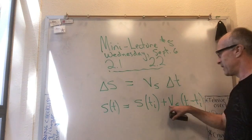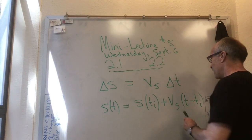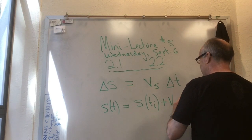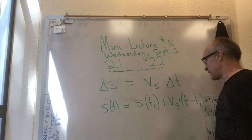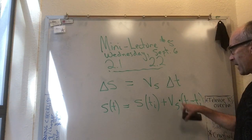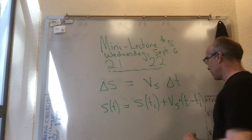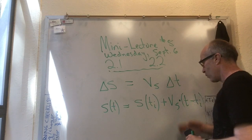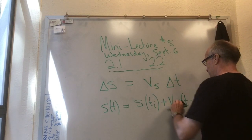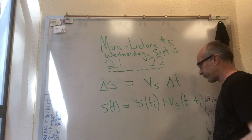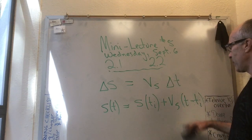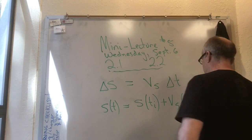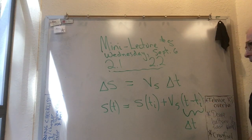Don't confuse evaluating a function at some point with just ordinary multiplication of something that happens to be in parentheses. That's another way of writing it, because ΔT is the current time minus the initial time.